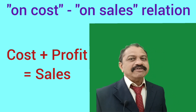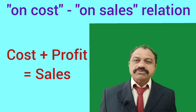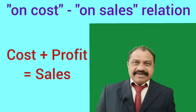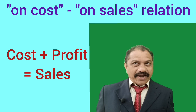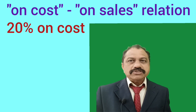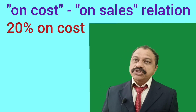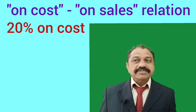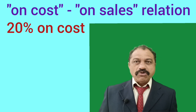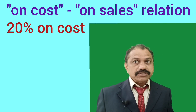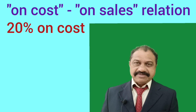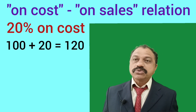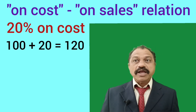The basic formula is: Cost plus Profit is equal to Sales. Example 1 — Profit is 20% on cost. Here, 100 stands for Cost. Cost plus Profit is equal to Sales: 100 plus 20 is equal to 120.